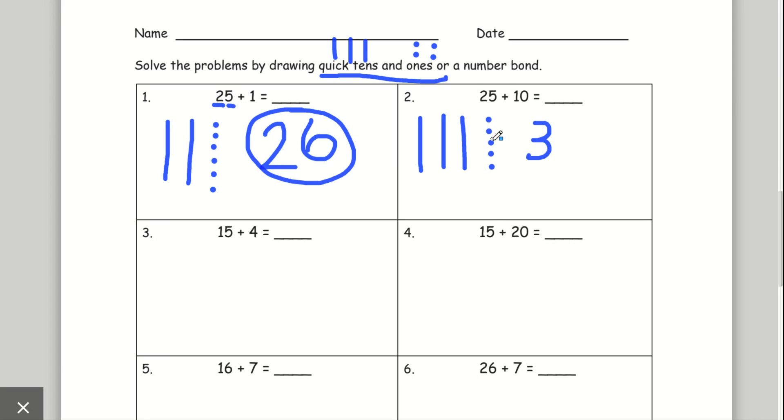And 1, 2, 3, 4, 5 ones. 25 plus 10 equals 35.